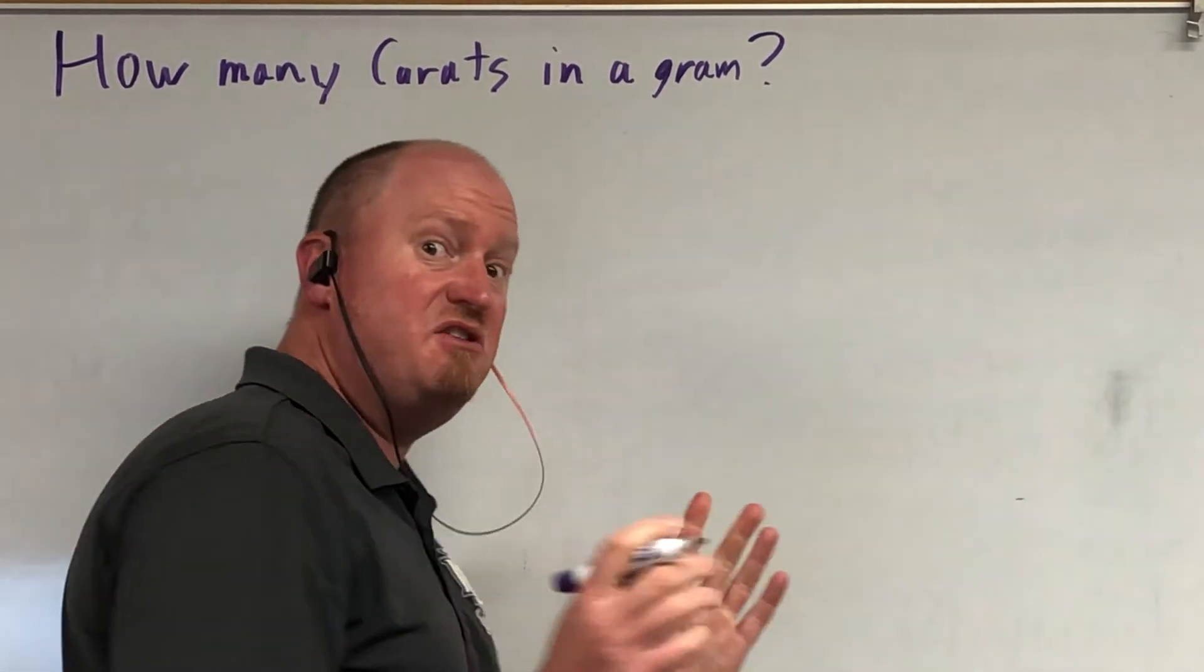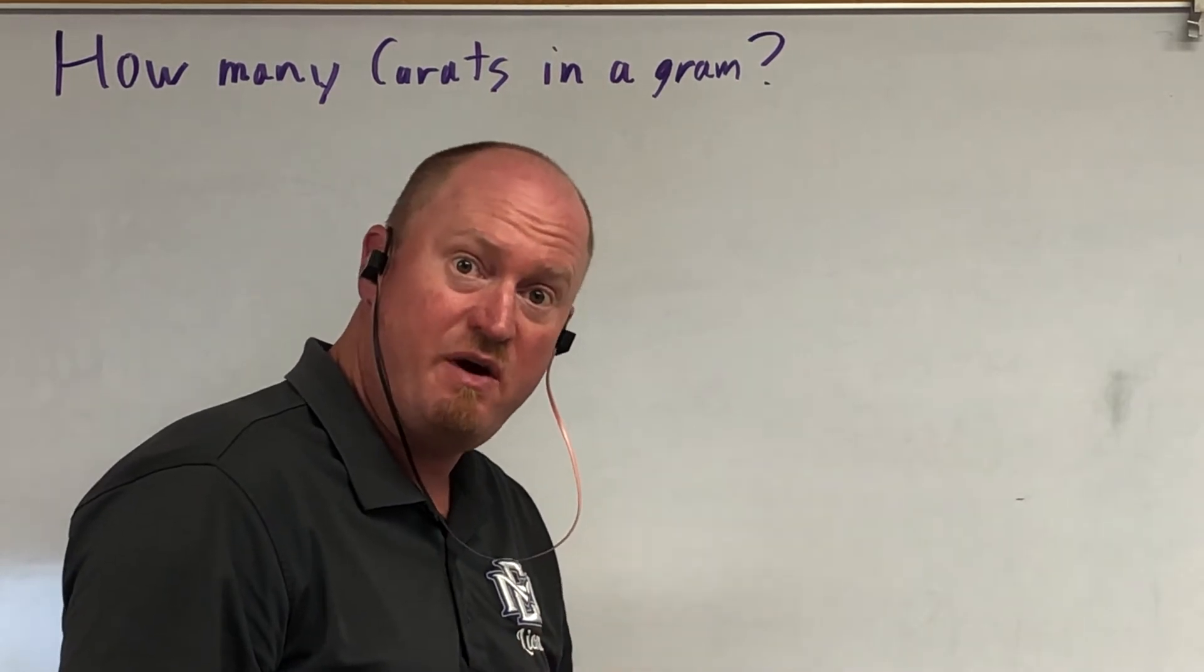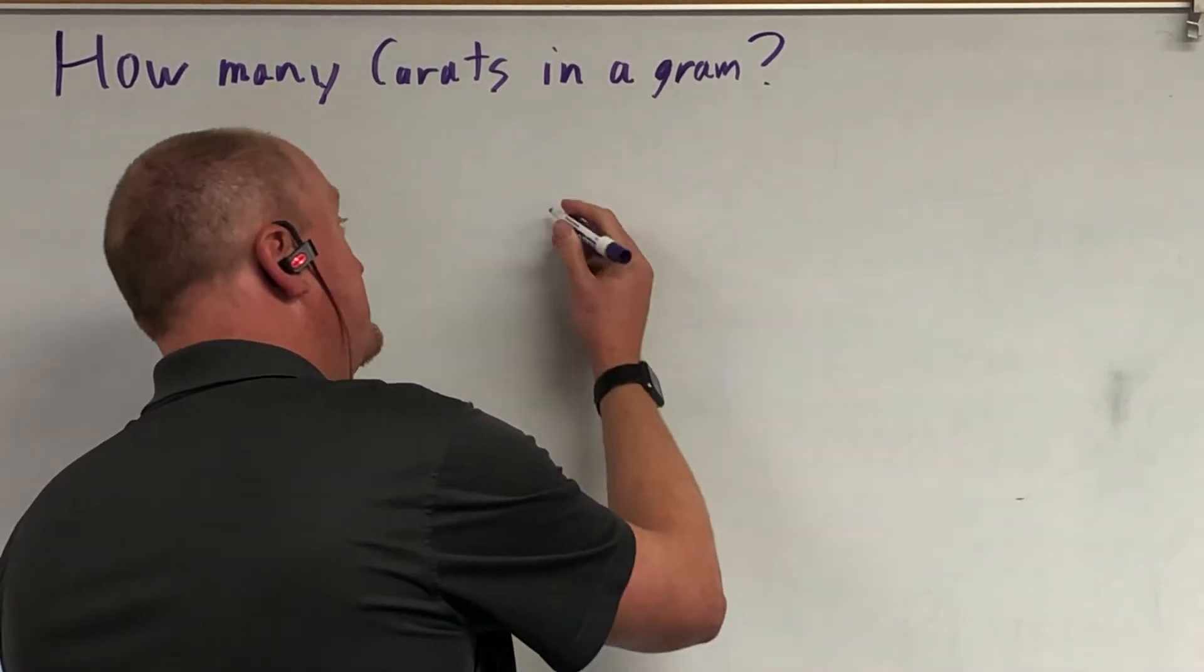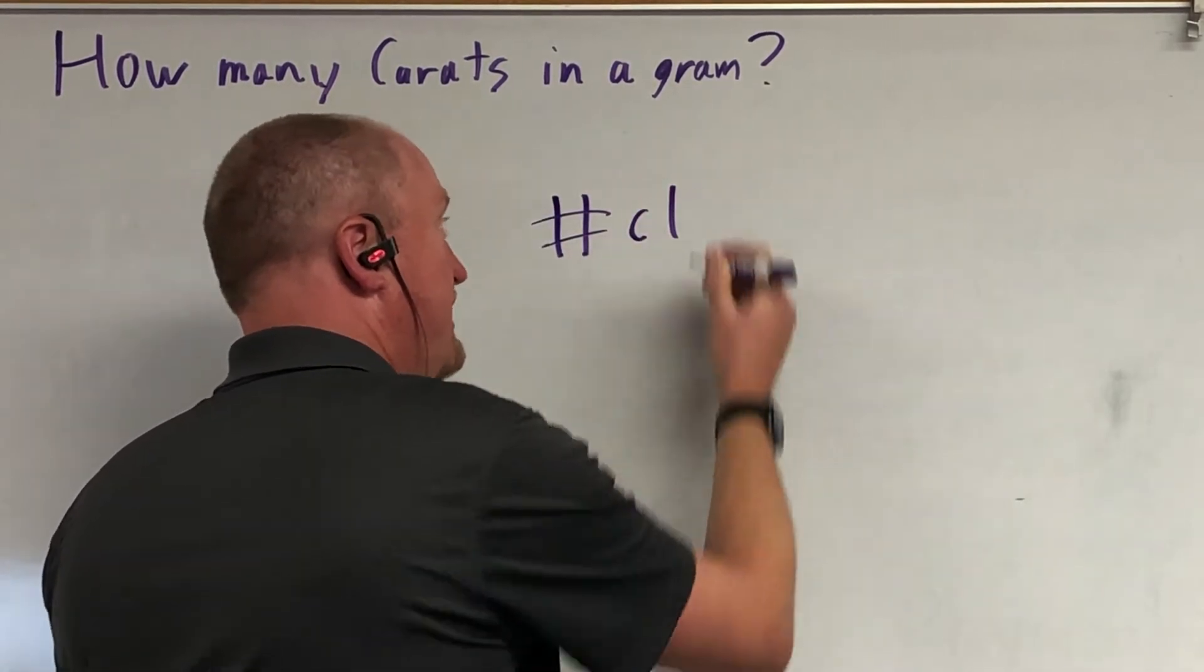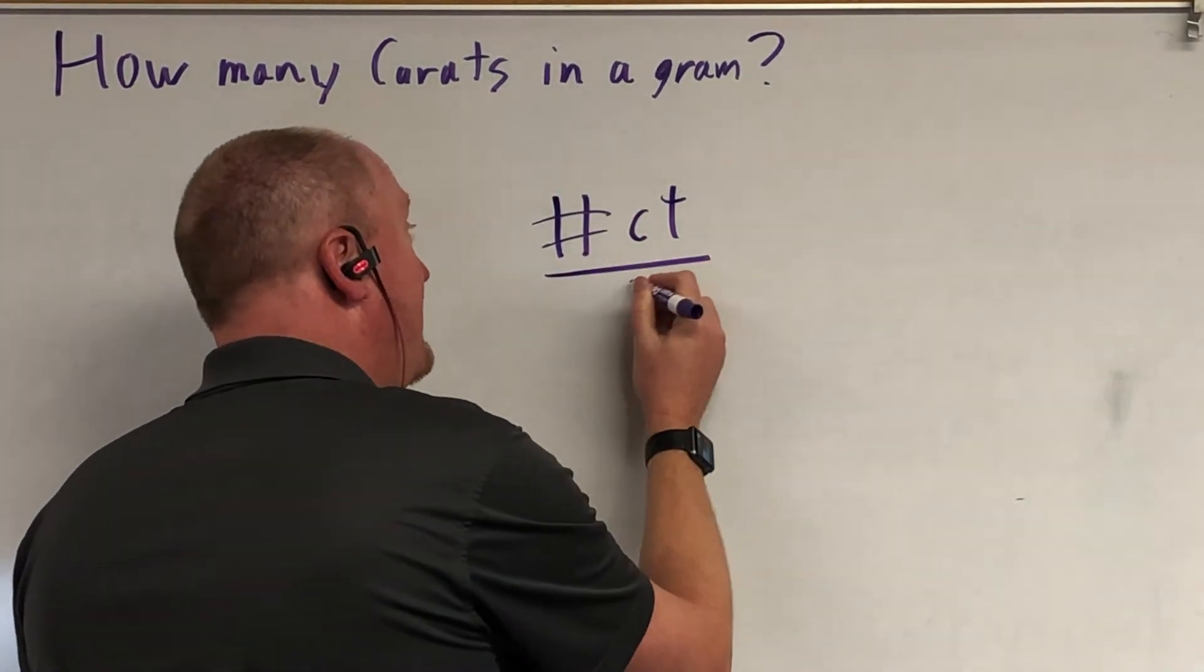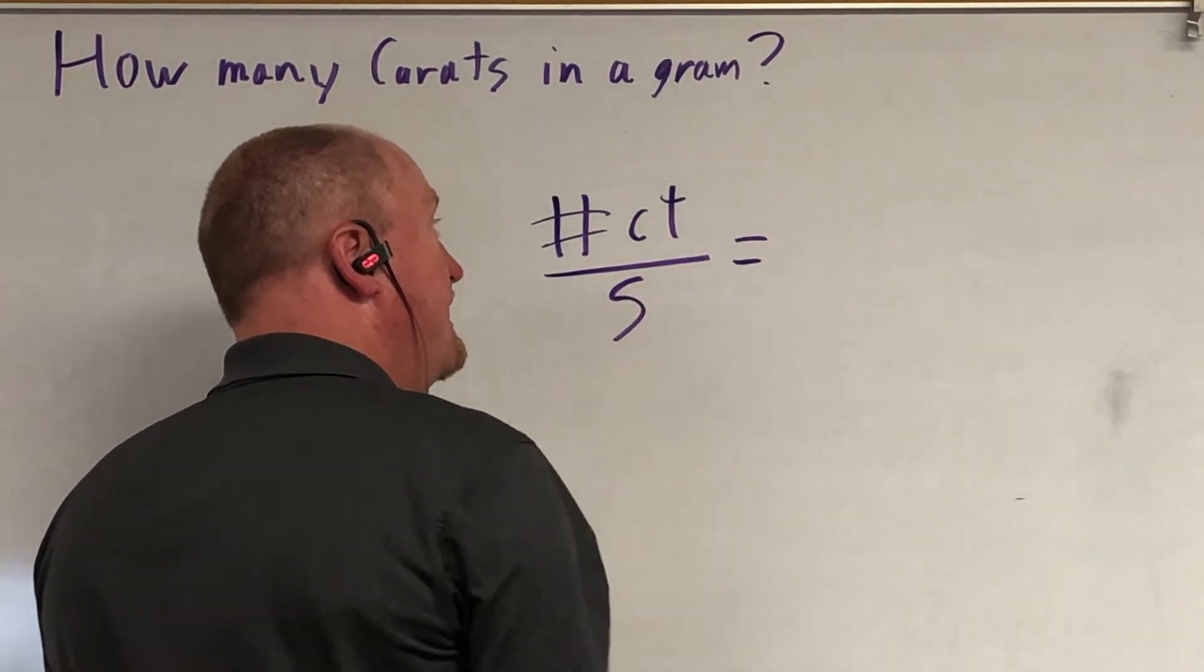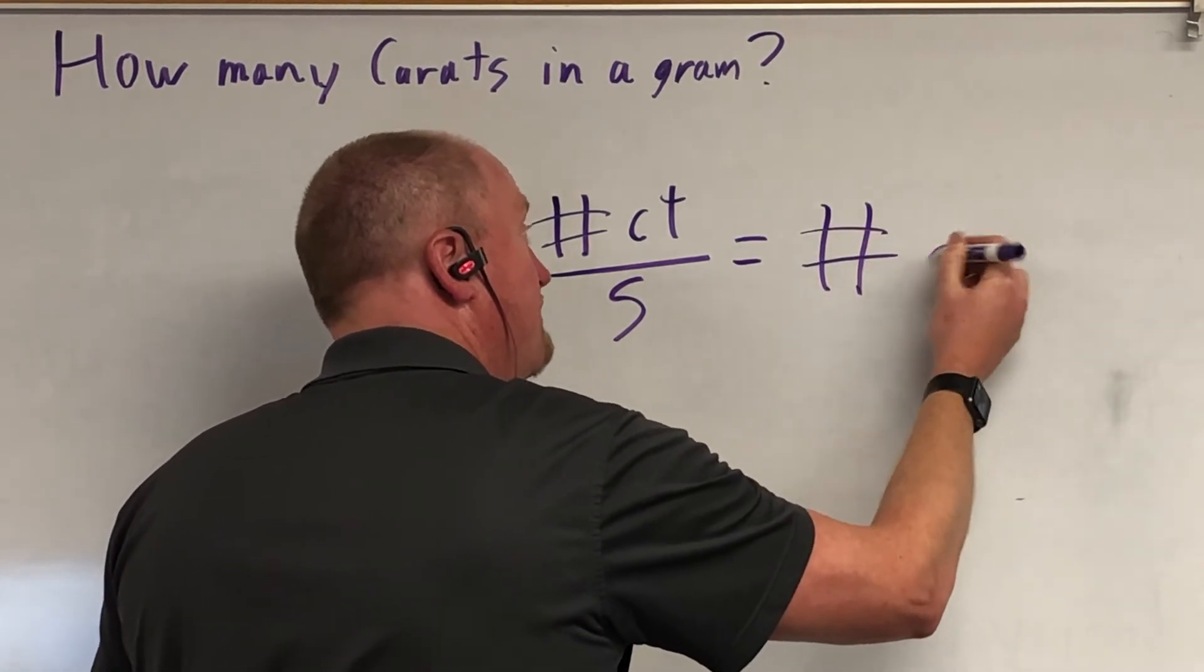And basically it comes down to this: there are five carats in a gram. So you take the number of carats—CT is the abbreviation for carats—divide it by five, and that equals the number of grams.